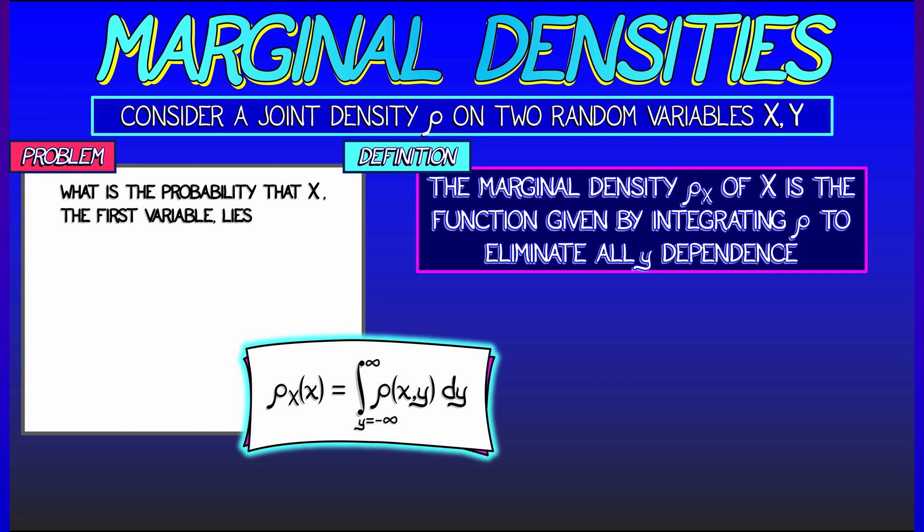What's the probability that the x variable, the first component, lies in the interval from a to b? Well, I have to integrate the joint probability density as x goes from a to b, and then as y goes from negative infinity to positive infinity.